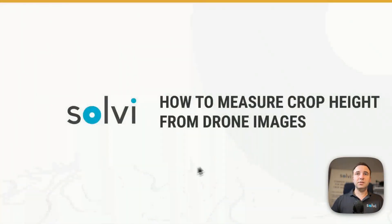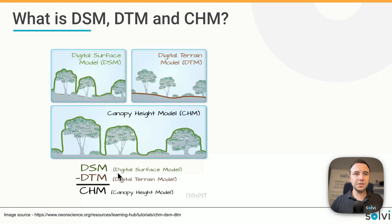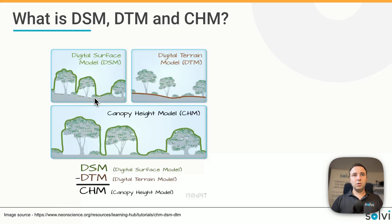Let's look at a few terms here before we go further, because those are really crucial to understand. There is a DSM — Digital Surface Model; there is a DTM — Digital Terrain Model; and there is a CHM — Canopy Height Model. The DSM essentially is the whole surface of the earth, or a specific field that you're flying over, including all the objects on top of it — trees, buildings, everything.